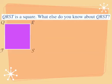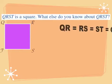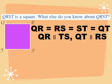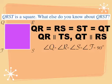QRST is a square — what else do we know? Everything true of a rhombus and everything true of a rectangle will apply. First, all sides are congruent: QR equals RS equals ST equals QT. The opposite sides are parallel: QR is parallel to TS, and QT is parallel to RS. All angles are 90 degrees: angle Q, angle R, angle S, and angle T are all equal to 90 degrees.